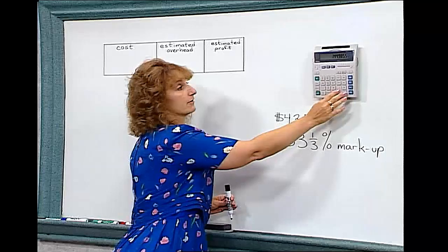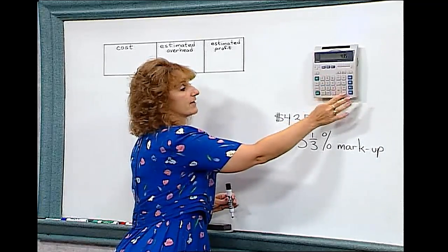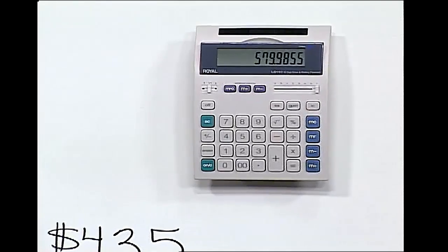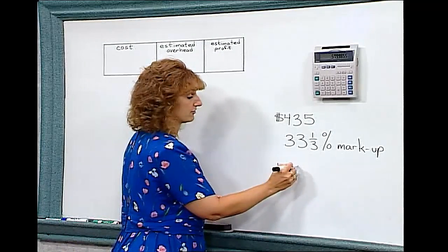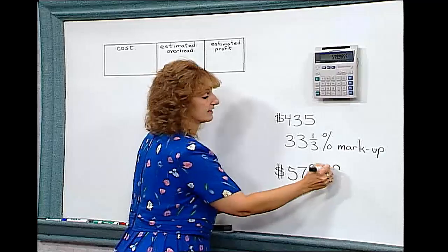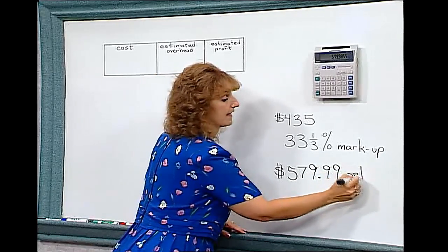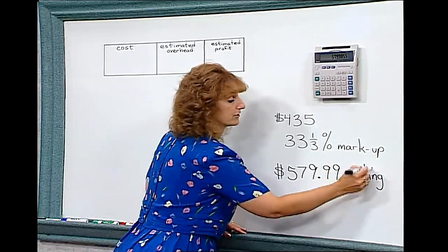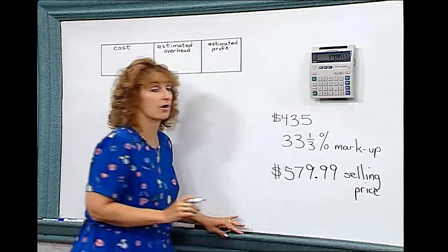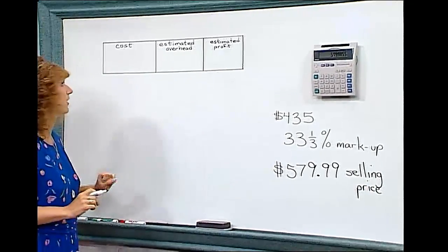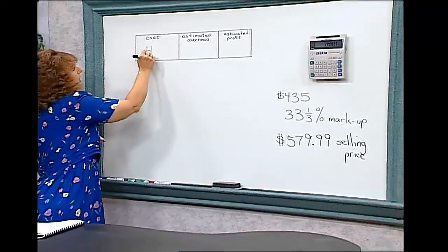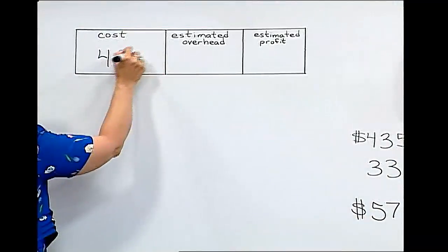That's the increase in price, so we have to add the cost of the refrigerator — four hundred thirty-five dollars — to find that our selling price is five hundred seventy-nine dollars and ninety-nine cents. That's how much they're going to sell the refrigerator to you for. Now let's look at this chart and analyze where this money goes. The cost of the refrigerator was four hundred thirty-five dollars.